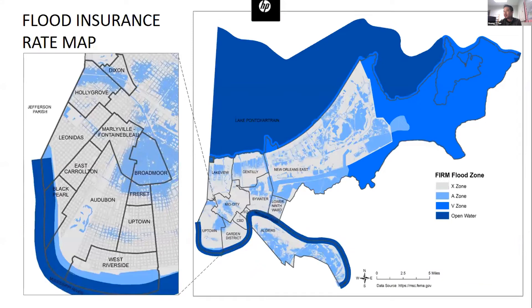We can clearly see the spatial clustering in the center of the city, which is like a bowl. This is the flood insurance rate map of the flood zones, highlighting the A light blue special flood hazard area, which has a 1% or 100-year storm flooding events. Again, we can see the spatial correlation of flood risks.